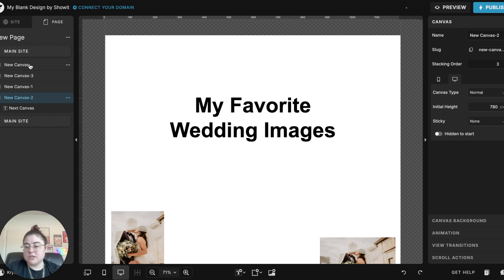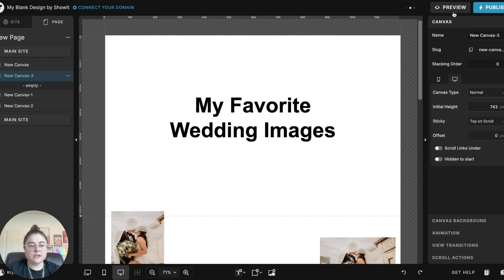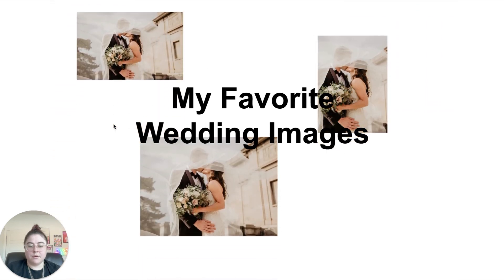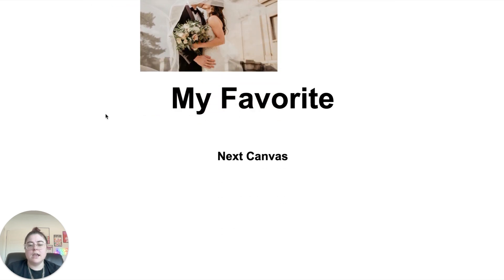We need to make sure both the title canvas and the blank placeholder canvas are set to sticky "top on scroll." Now if we preview it, the images scroll up underneath the text instead of going over it. That's the adjustment you can make depending on whether you want images over or under the text. And you can use this with anything — text, images, icons — whatever you want on the sticky scroll canvas, it'll keep going.